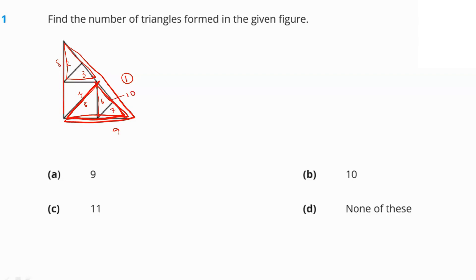And we have another big triangle here including 2, 3, and 4, which is the 11th triangle. So there are a total of 11 triangles in the entire figure. Option number C is our right answer.